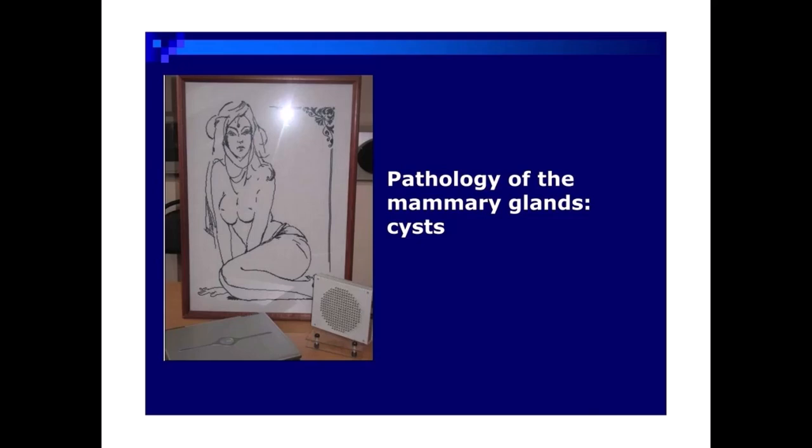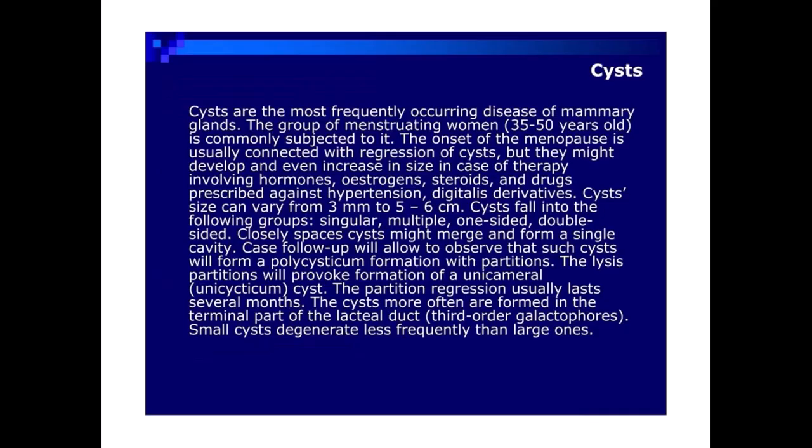Pathology of the mammary glands: cysts. Cysts are the most frequently occurring disease of mammary glands. The group of menstruating women, 35 to 50 years old, is commonly subjected to it. The onset of the menopause is usually connected with regression of cysts, but they might develop and even increase in size in case of therapy involving hormones, oestrogens, steroids, and drugs prescribed against hypertension — digitalis derivatives.